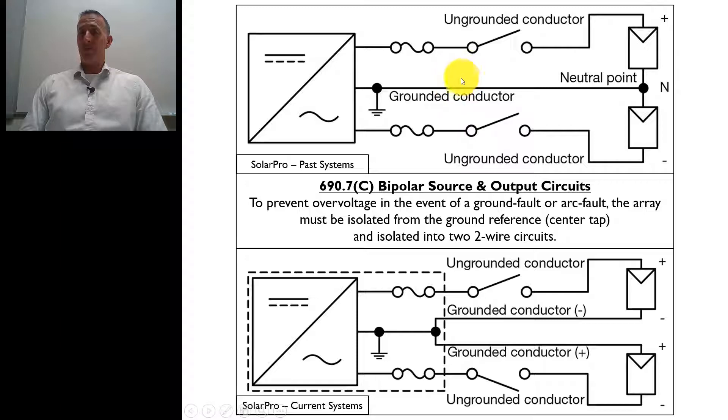And if they ever had a fault and something was lifted, that was no longer connected to the earth. And then that meant that the voltage would actually be the combination between positive and negative, which would exceed the rating of the inverter, damage the inverter, actually cause a safety hazard.